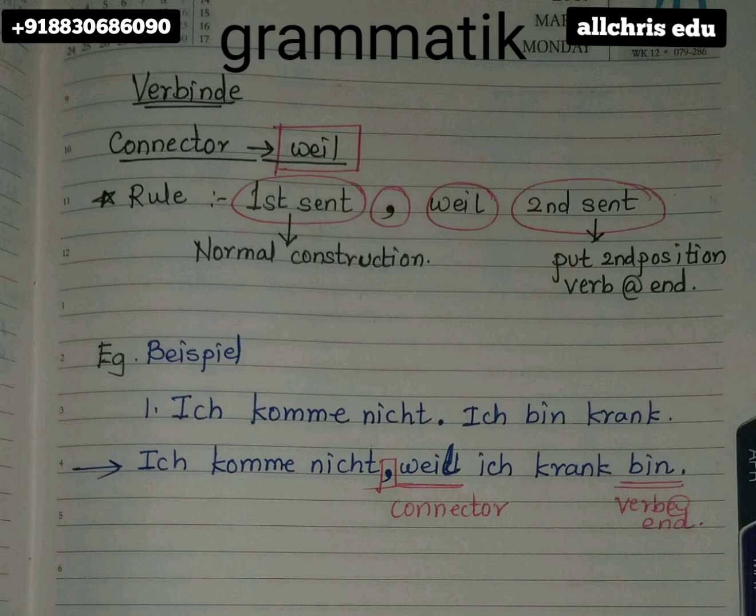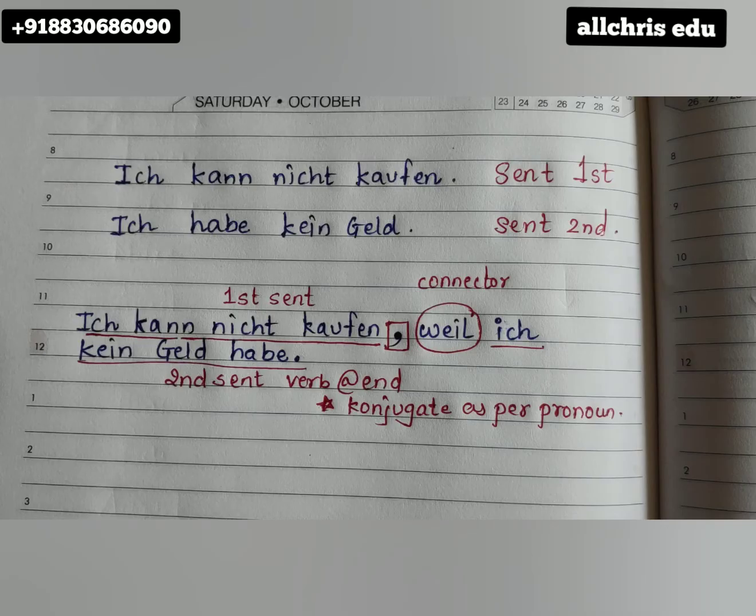You have to conjugate that verb according to the pronoun in the sentence. The pronoun in the sentence is 'ich', so the word 'bin' is used there. Just take out the verb and put it at the end — that's it.